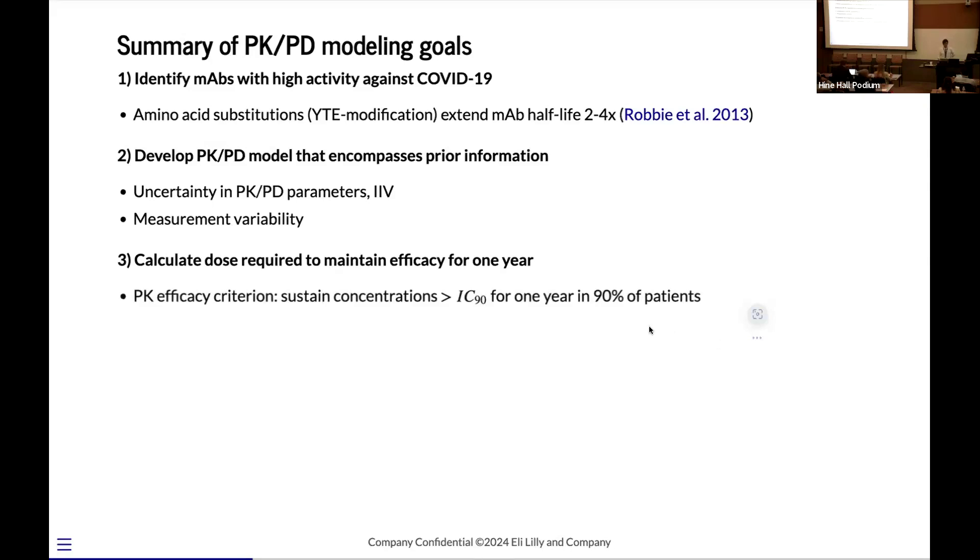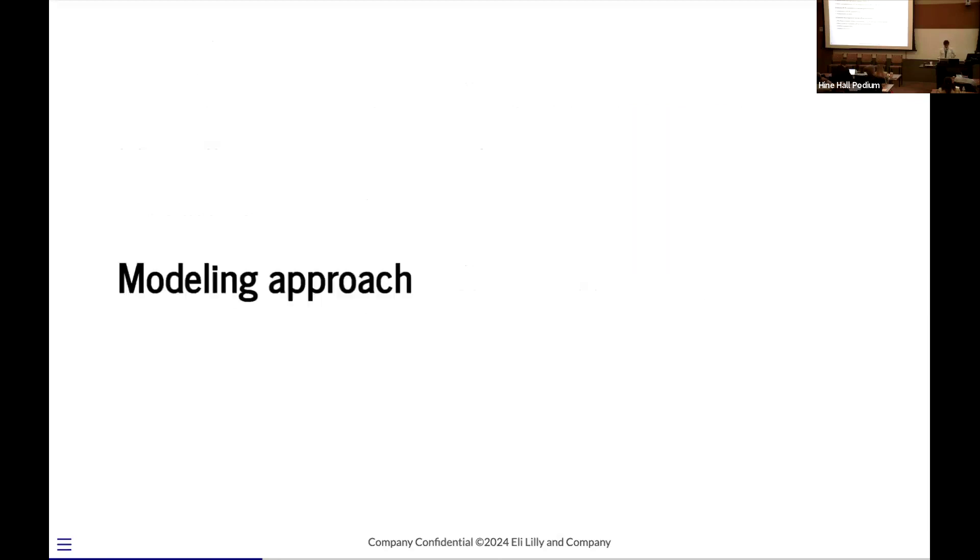Traditionally, we've looked at efficacy from a PK standpoint, where we want to sustain concentrations greater than the IC90 for one year in 90% of the patients. So this is one of the criteria that you could use. However, we are interested in evaluating many antibodies, potentially. And for each antibody, we want to know how it does against many different viral variants. And so we're going to be going through this calculation process many times.